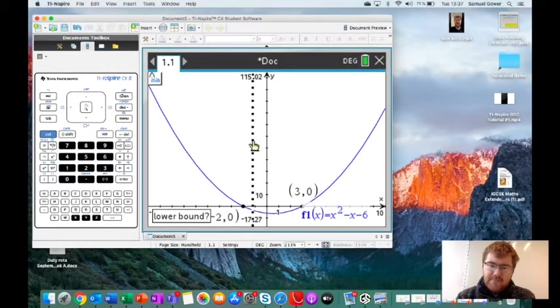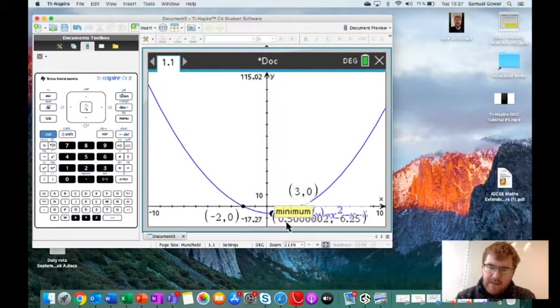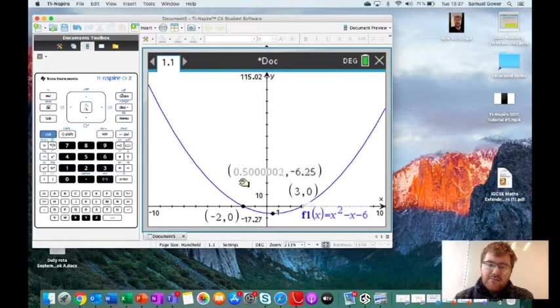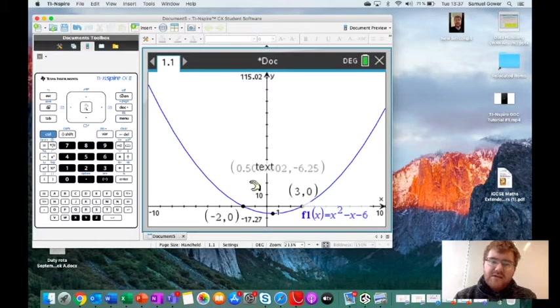We have to tell the calculator where to scan, so we know it's roughly around here somewhere. We click before, we click after, and then it will read it off. In this case, 0.5000002. Sometimes it's not entirely accurate, but I think we can probably assume here that the x-coordinate of our minimum point will be 0.5 and our y-coordinate will be minus 6.25.